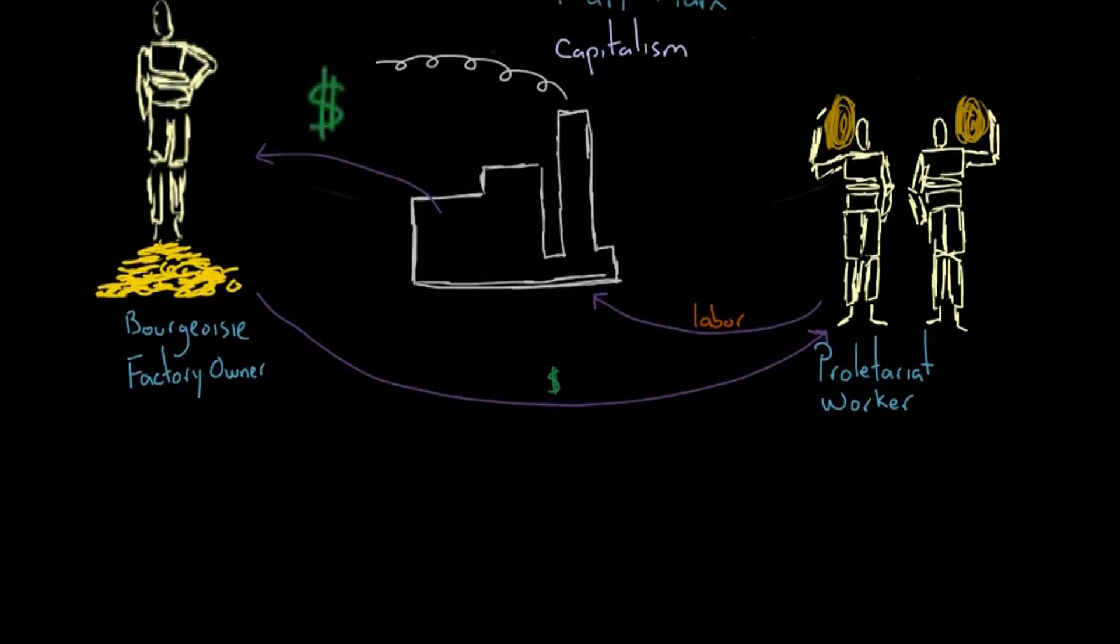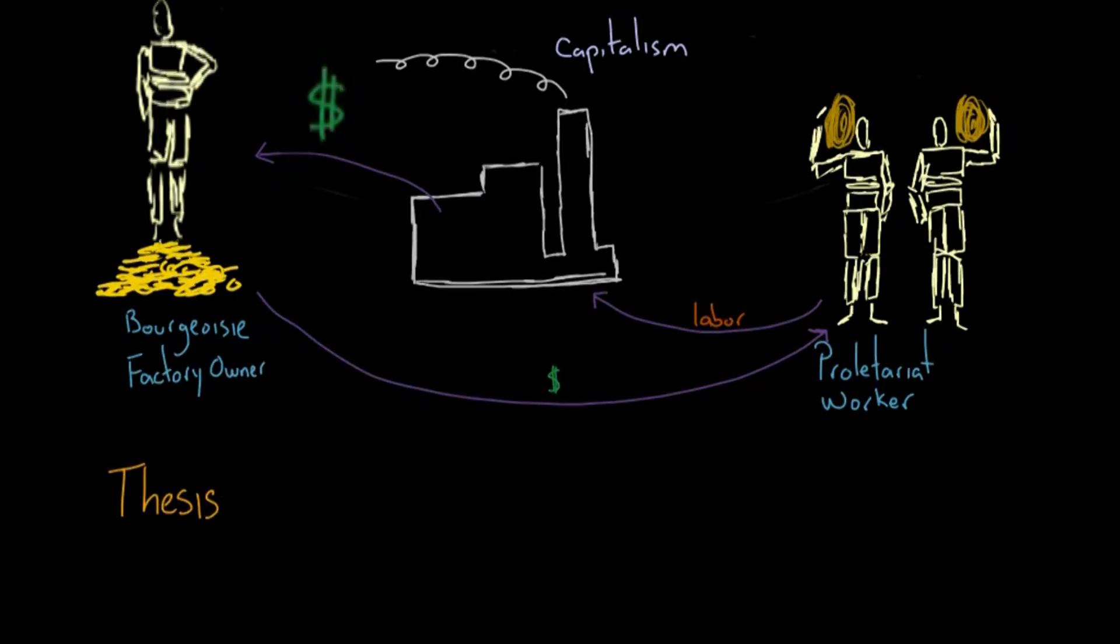In a capitalist society, the accepted thesis was that the bourgeoisie ran the factories while the working class provided the labor. The desire of the working class to change the way things were was the antithesis. The thesis and antithesis can't exist together peacefully.